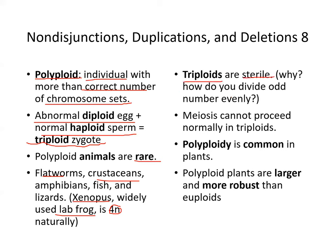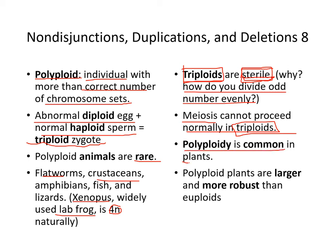Triploids are sterile because there is no way to evenly divide an odd number of chromosomes to produce viable gametes — meiosis cannot proceed normally in triploids. Polyploidy is common in plants; many food crops are polyploid, and polyploid plants tend to be larger and more robust than euploids. For instance, rice is 3N and wheat is 4N.